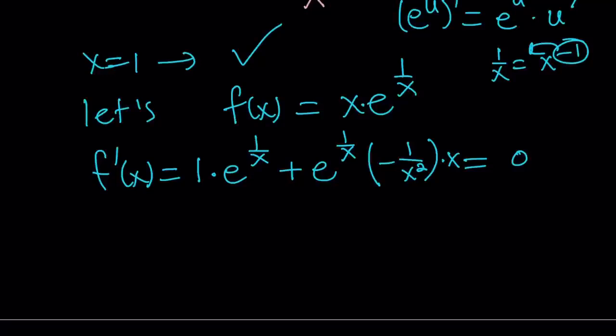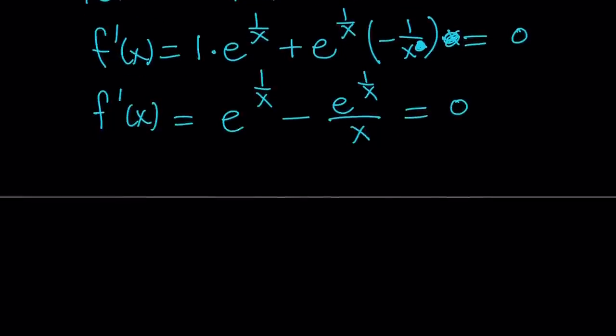Okay. So, now, if you simplify this, x, obviously, is positive, it's not 0, so we can do this, cross out the x's, and then we get the following, f prime of x is equal to e to the power 1 over x minus e to the power 1 over x divided by x. This is kind of nice, because we can kind of make a common denominator, and take out e to the power 1 over x, and then we should be getting x minus 1 over x equals 0.